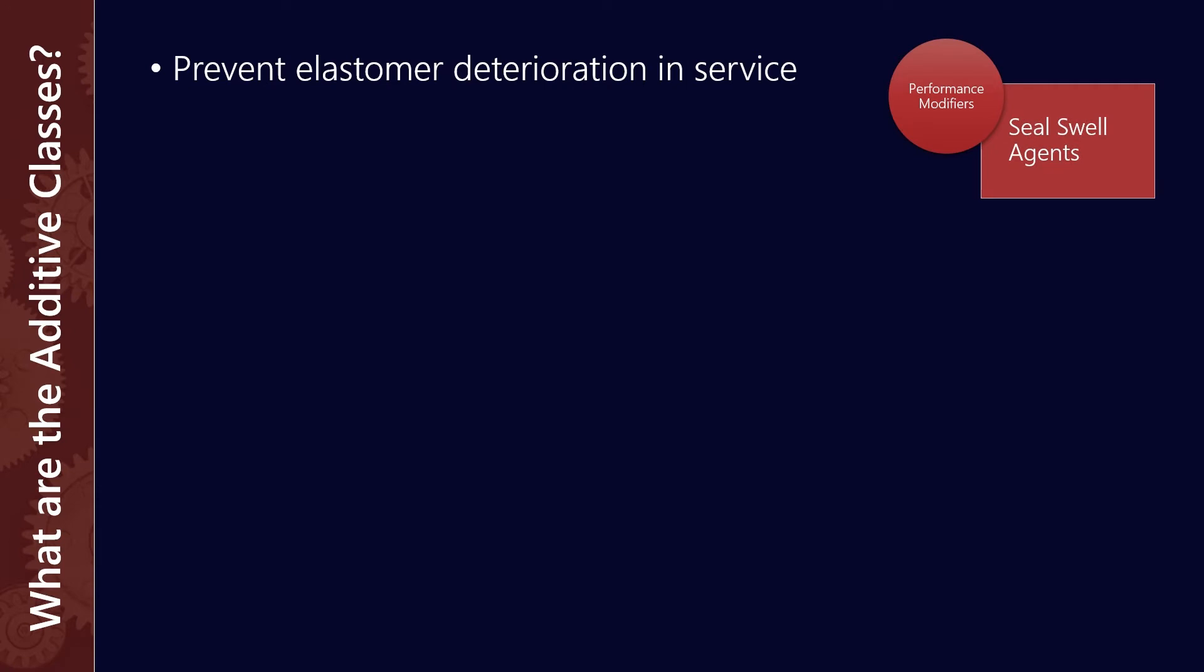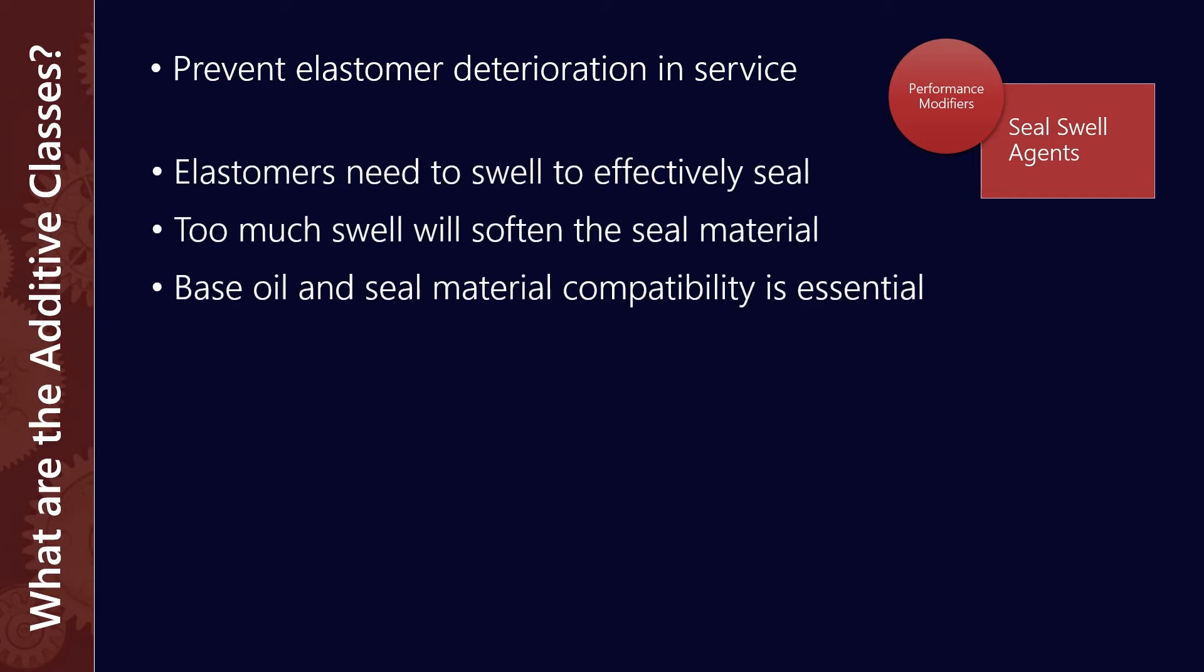Seal swell agents help prevent elastomer deterioration in service. We need that because elastomers need to swell to seal effectively, and too much swell can soften the seal material to the point where it actually starts to leak. The base oil and seal material compatibility is super essential.